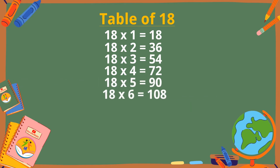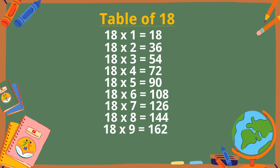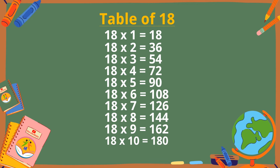18 sixes are 108. 18 sevens are 126. 18 eights are 144. 18 nines are 162. 18 tens are 180.